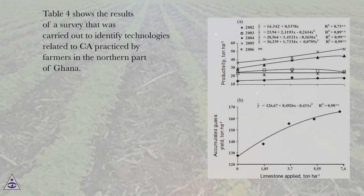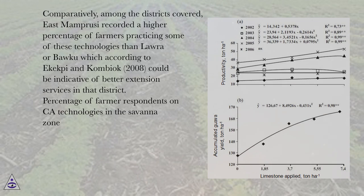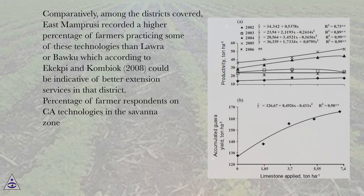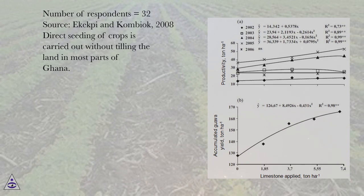Table 4 shows the results of a survey carried out to identify technologies related to CA practiced by farmers in the northern part of Ghana. Among the districts covered, East Monproussi recorded a higher percentage of farmers practicing some of these technologies than LoRa or Baku, which according to IKPI and Kambayak (2008) could be indicative of better extension services in that district. The table shows the percentage of farmer respondents on CA technologies in the savannah zone, with 32 respondents.